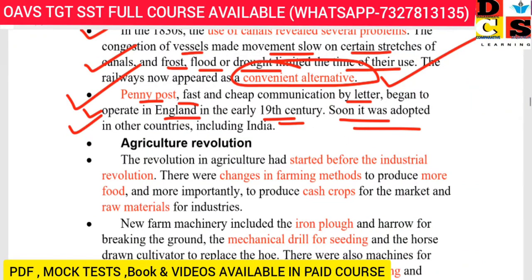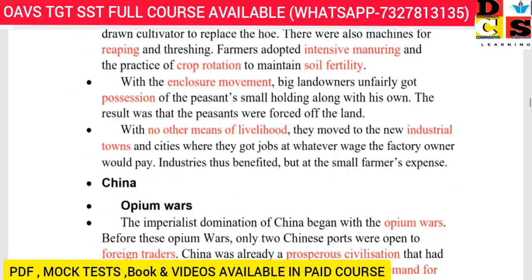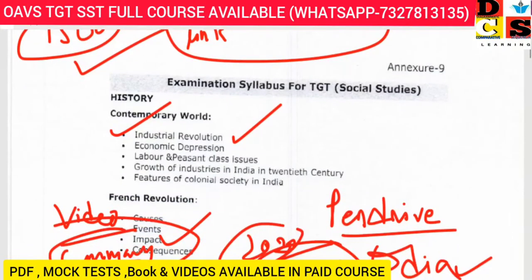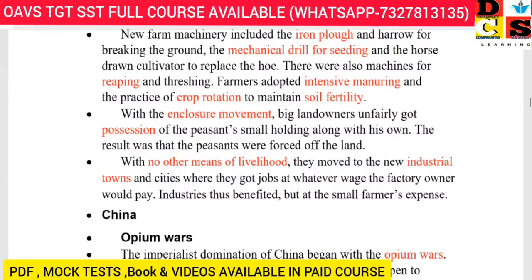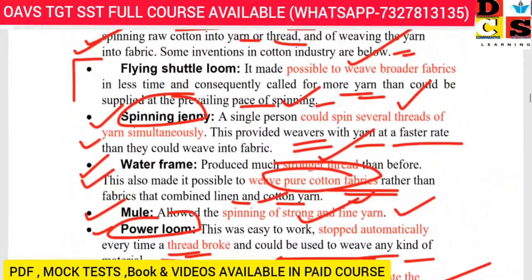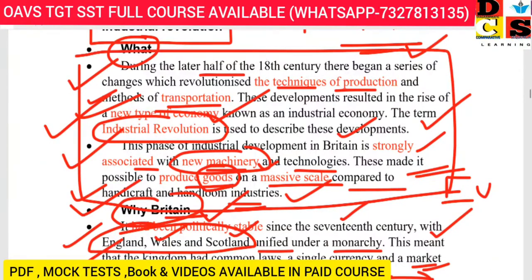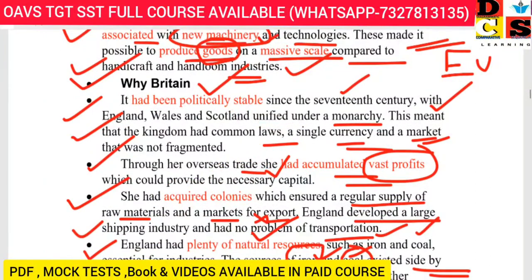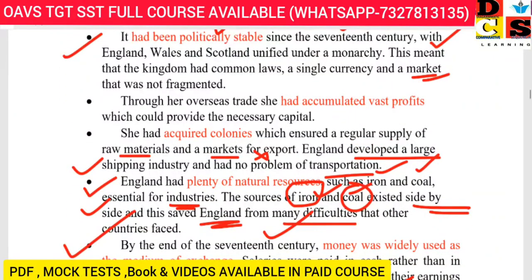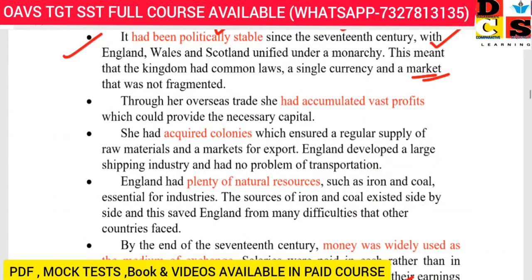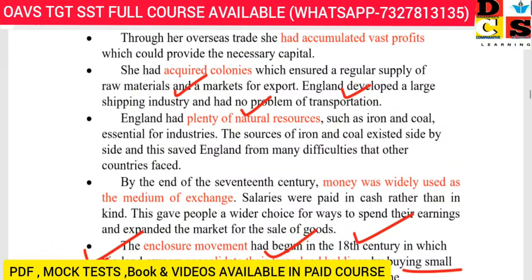So, to summarize the Industrial Revolution: changes in machinery, technical production, and transportation development transformed the economy — that is called the Industrial Revolution. Britain was the first because it had a unified monarchy, a stable political system, vast accumulated profits, colonies acquired for a regular supply of raw materials and export markets, a large shipping industry, and England's transportation advantages along with plenty of natural resources.